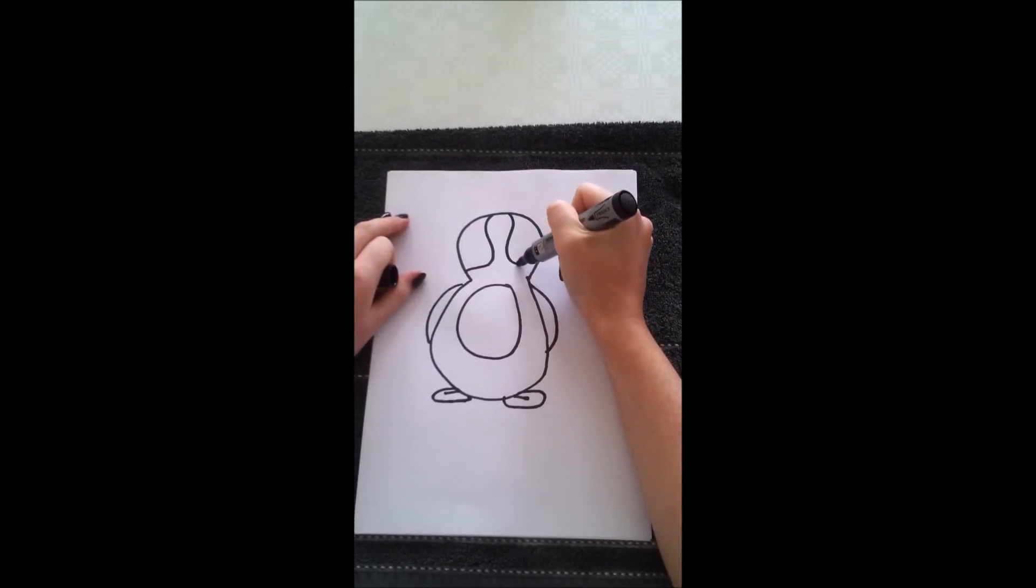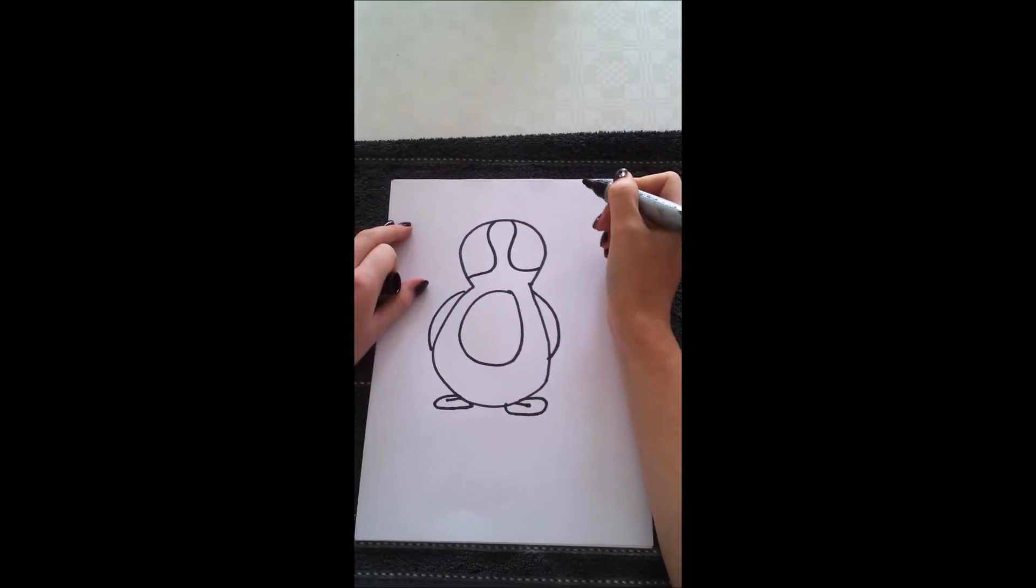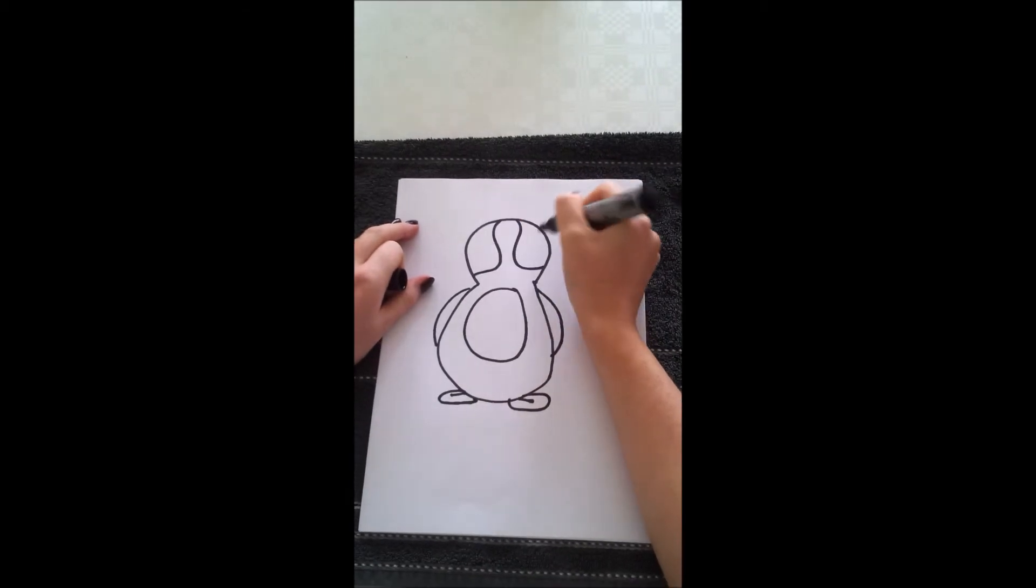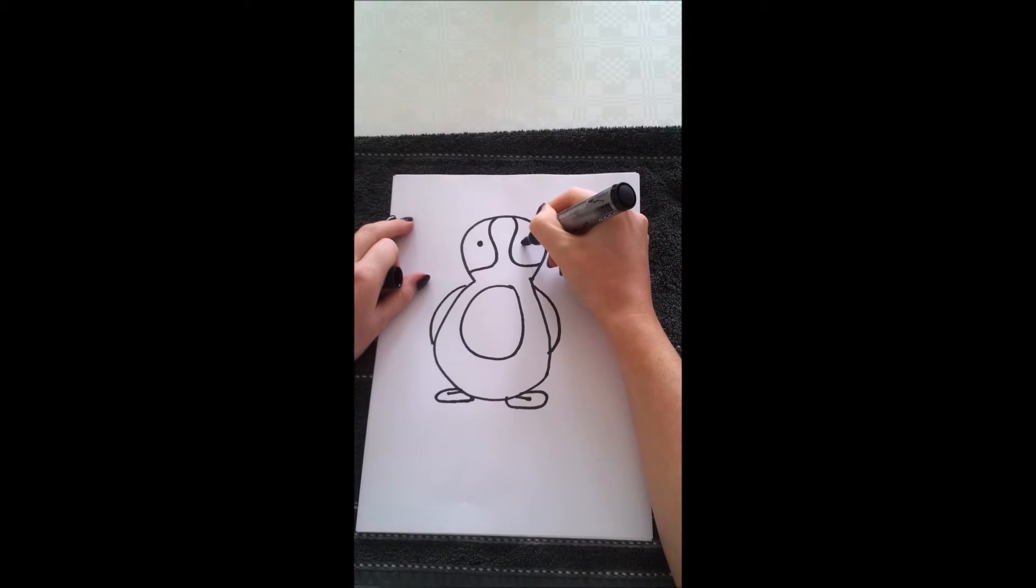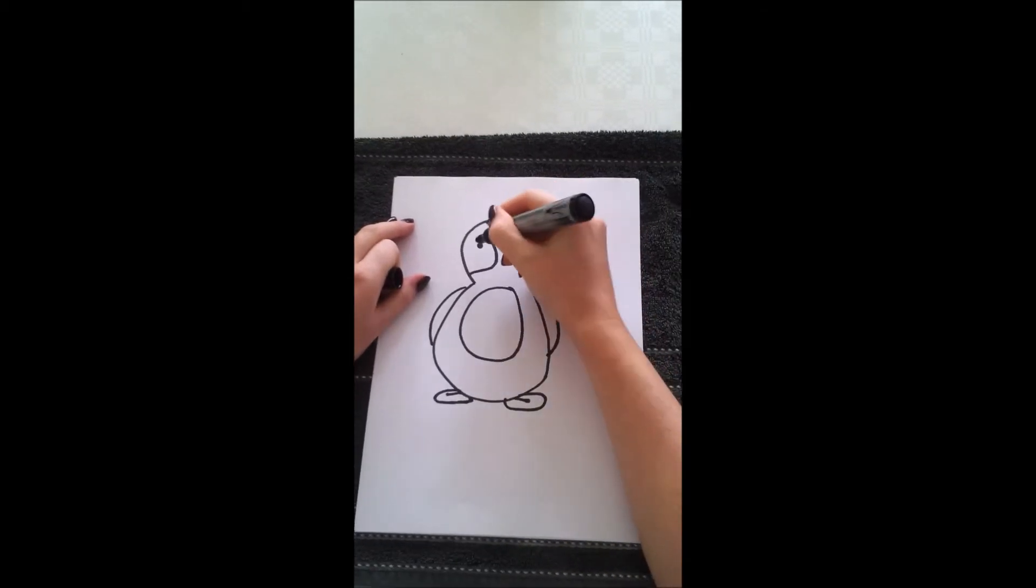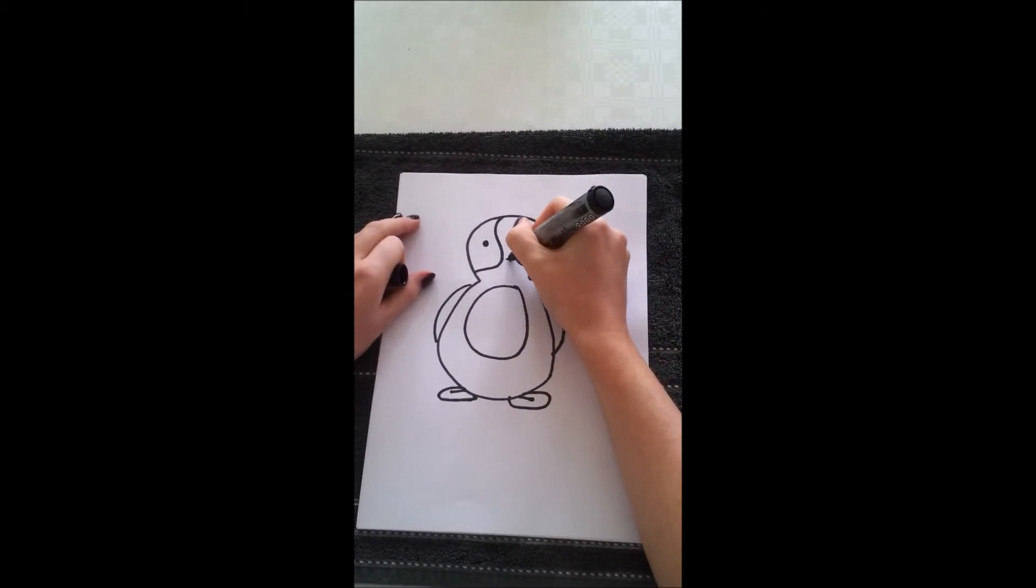but once you get it, it makes your penguin look so much better. Once you've done these two sections, add a circle and another circle for the eyes. You can add a small nose.